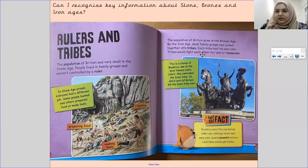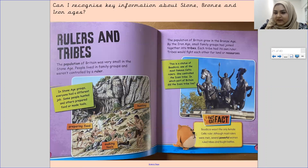The population of Britain grew in the Bronze Age. By the Iron Age, small family groups had joined together into tribes. Each tribe had its own ruler. Tribes would fight each other for land or resources. This is a statue of Boudicca, one of the most famous Celtic rulers — she controlled the Iceni tribe. Boudicca wasn't the only female Celtic ruler; although most rulers were men, several powerful women ruled tribes and fought battles.